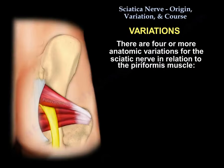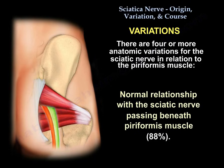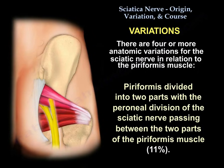Four or more variation patterns are identified in the majority of patients, about 88%. In this pattern, the sciatic nerve passes underneath the piriformis muscle. In another pattern, found in about 11% of cases, the piriformis is divided into two parts, with the peroneal division of the sciatic nerve passing between the two parts of the piriformis muscle.